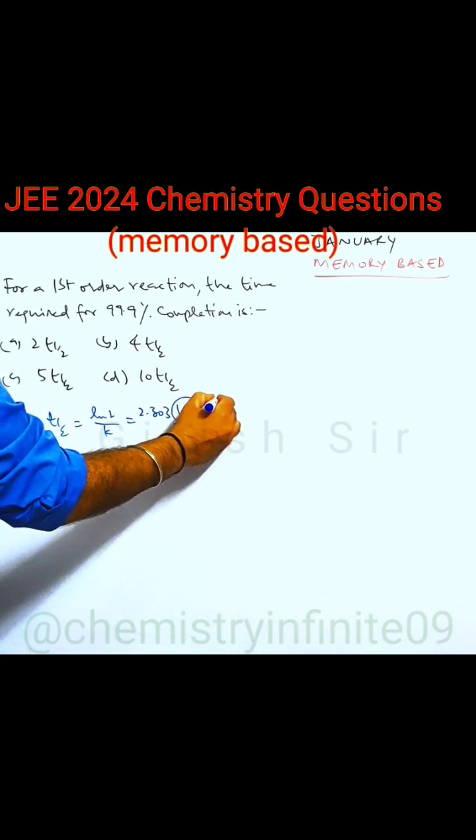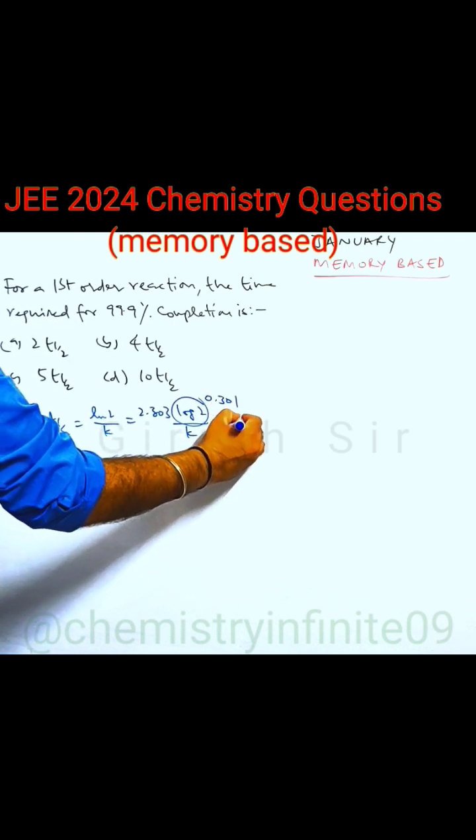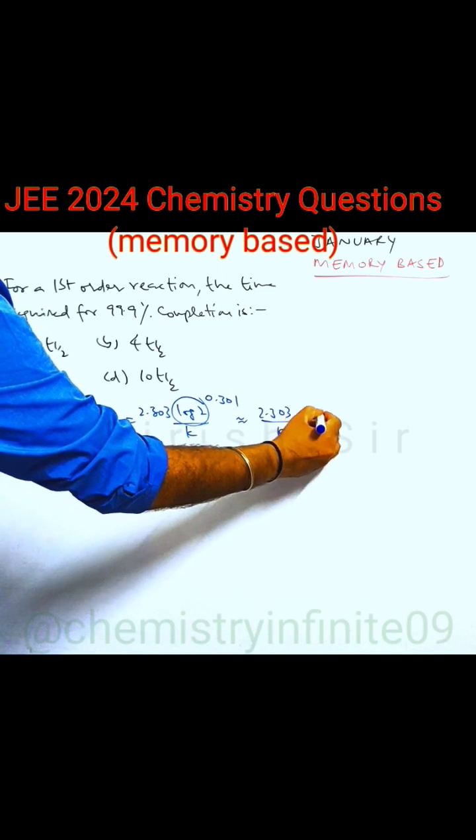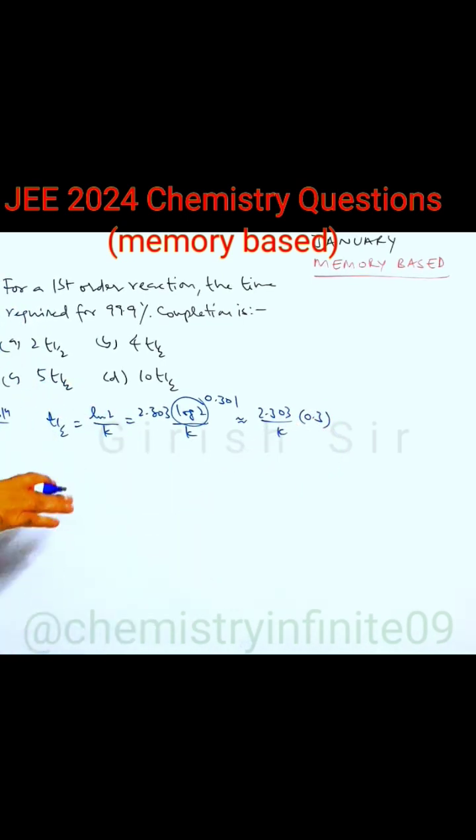The value of log 2 is 0.301, which we can take approximately as 0.3. This is t half. We need to know this expression as we have to find the answer in terms of t half.